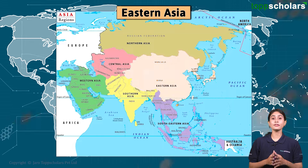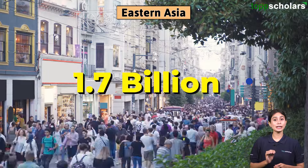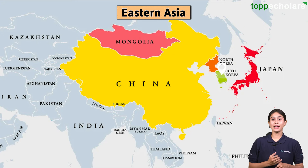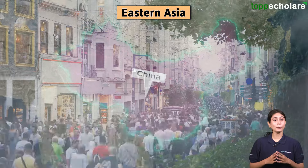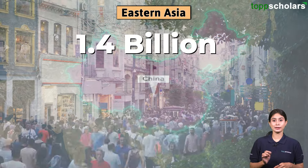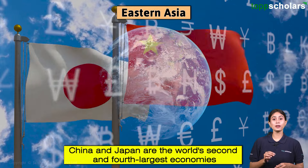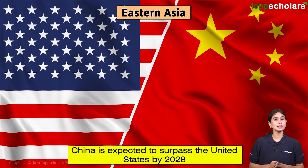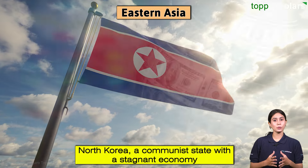Now let us know about the countries of Eastern Asia. It is a sub-region of Asia with a population of nearly 1.7 billion and comprises 6 countries: China, Japan, Mongolia, North Korea, South Korea, and Taiwan. China is the world's second most populous country with a population of over 1.4 billion, while Mongolia has a population of 3.29 million. China and Japan are the world's second and fourth largest economies respectively. China is expected to surpass the United States by 2028. While South Korea is flourishing, North Korea is a communist state with a stagnant economy.